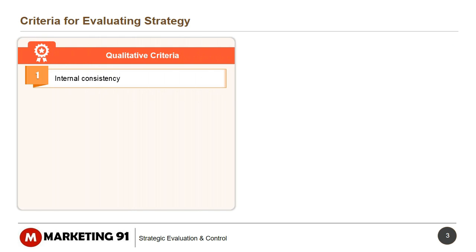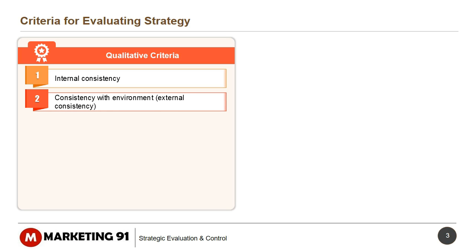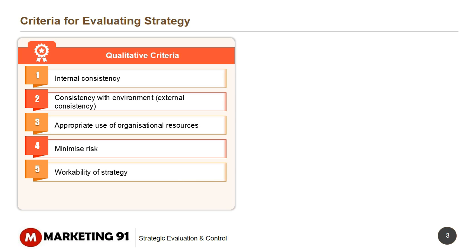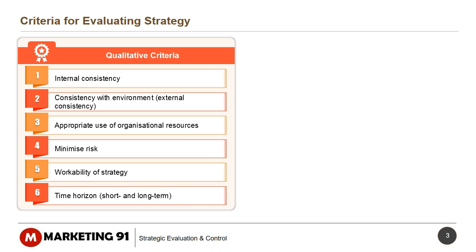Criteria for evaluating strategy. Qualitative criteria include: internal consistency, consistency with environment, external consistency, appropriate use of organizational resources, minimized risk, workability of strategy, and time horizon — both short-term and long-term.